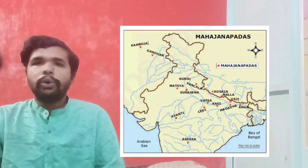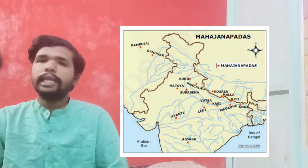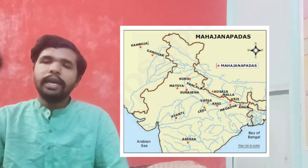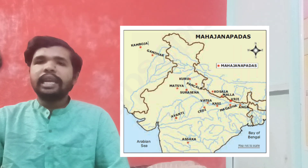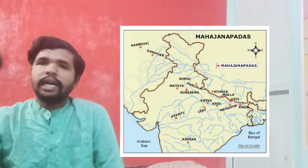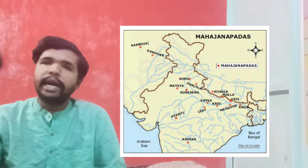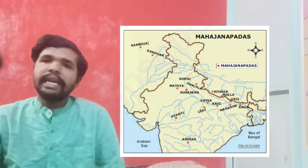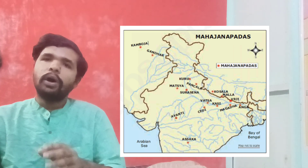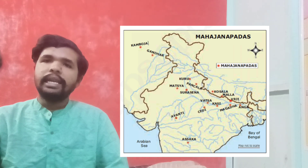The next is Kuru. Kuru is associated with the Mahabharata. There are two dynasties in the Kuru clan. The capital of Kuru is Indraprastha. The most important next one is Panchala. Panchala is divided into two parts — Northern Panchala and Southern Panchala. The Northern Panchala capital is Ahichhatra, and the Southern Panchala capital is Kampilya.